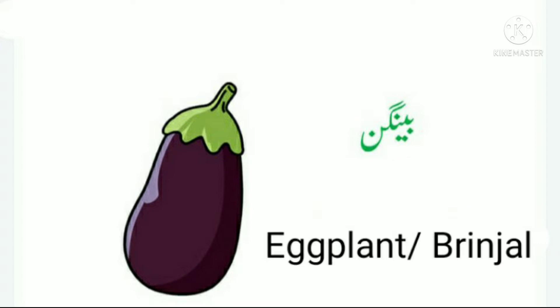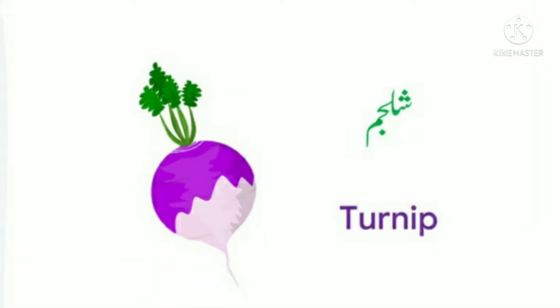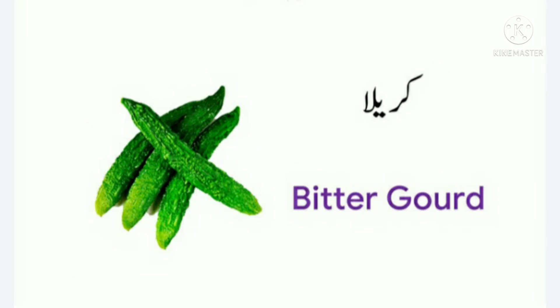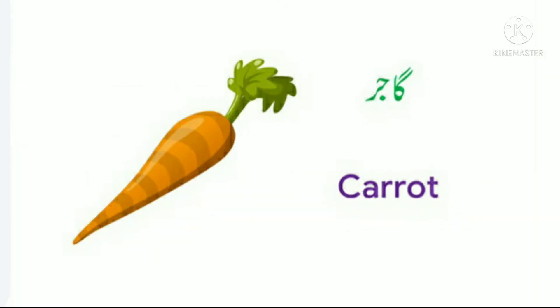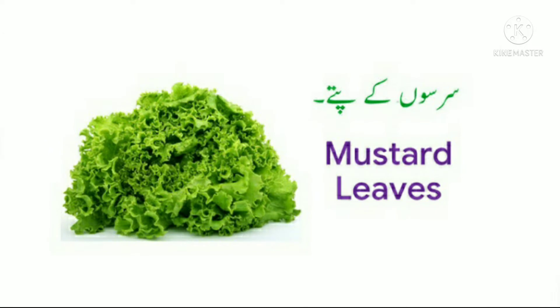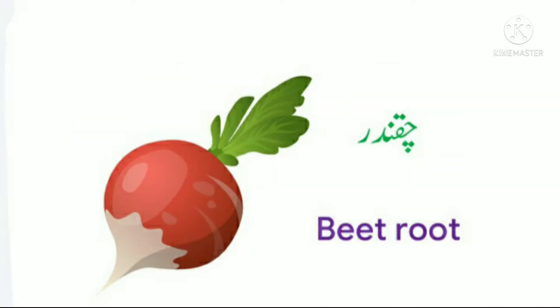Number nineteen: turnip, shaljam. Number twenty: capsicum, shimla mirch. Number twenty-one: bitter gourd, karela. Number twenty-two: carrot, gajar. Number twenty-three: coriander, dhaniya. Number twenty-four: mustard leaves, sarson ke patte. Number twenty-five: beet root, chukandar.